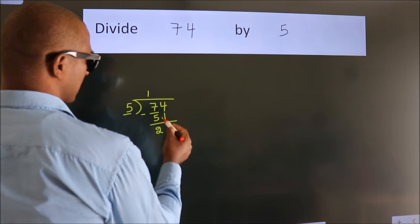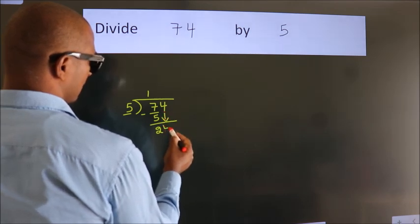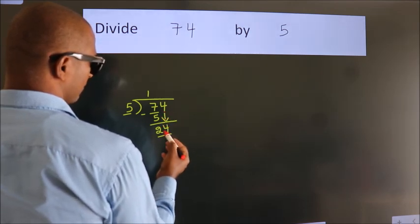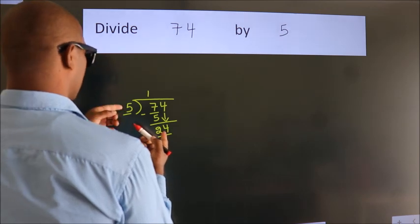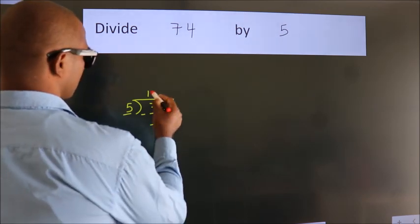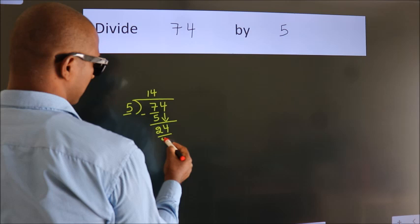After this, bring down the beside number. So 4 down, 24. A number close to 24 in the 5 table is 5 fours, 20.